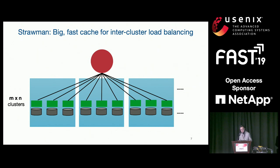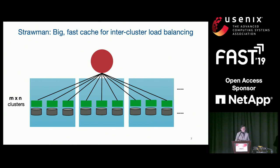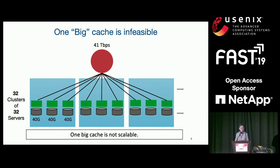But what if we consider a much larger scale — a scale with many clusters? For example, we have M clusters and each cluster has N servers. How to make these M×N servers balanced? A straightforward solution is to put the cache node in front of all M×N servers, but please remember that cache node needs to be as fast as the aggregate of all servers. For example, if we have 32 clusters each with 32 servers, and each server has 40G throughput, then the aggregate bandwidth is around 41 terabits per second — clearly not feasible on a single node.